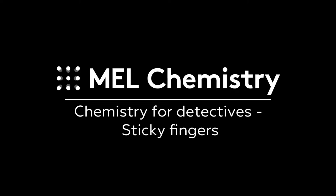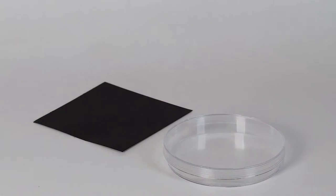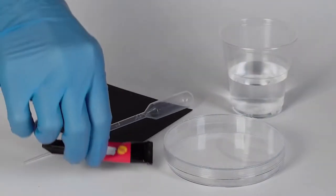For the sticky fingers experiment, you will need the Petri dish, a sheet of black paper, the Pasteur pipette, some water, and some superglue.